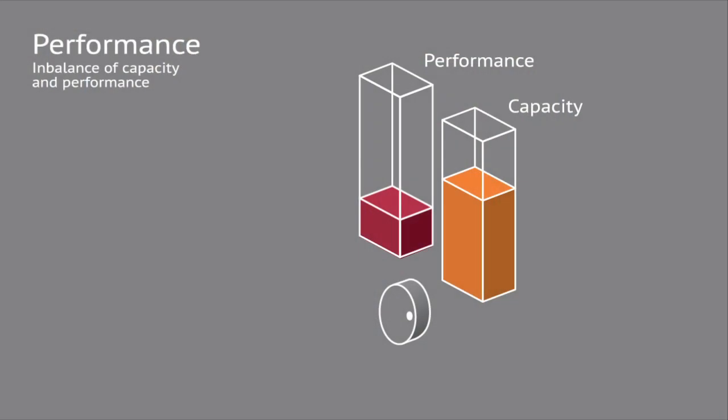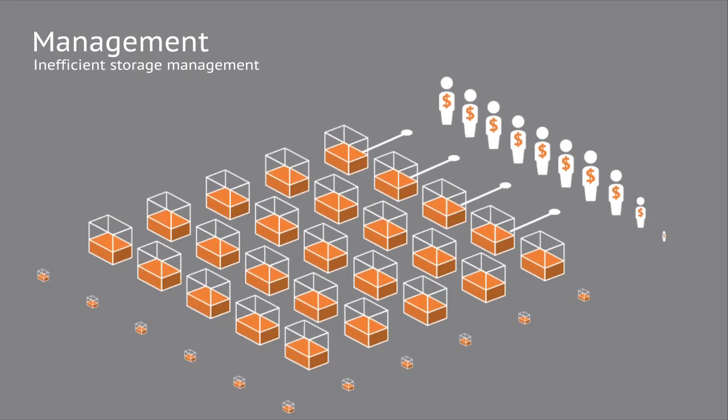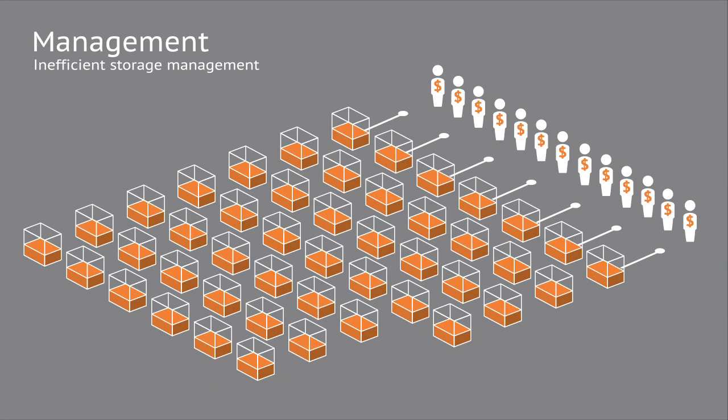Efficiency technologies like compression and deduplication either aren't available or just can't be used because they impact performance and deliver capacity that is never going to be used anyway. Inefficient storage utilization inevitably leads to a sprawling storage footprint, one that's increasingly difficult to control and impossible to fully automate.